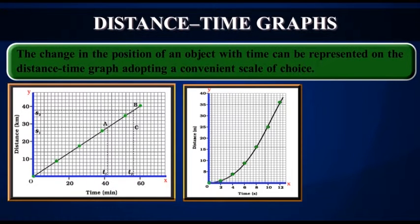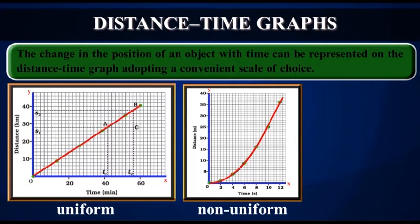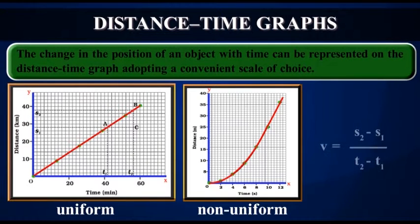Distance Time Graphs can be employed under various conditions where objects move with uniform speed, non-uniform speed, or remain at rest. The speed v of the object can therefore be represented as v = (s2 - s1) / (t2 - t1).